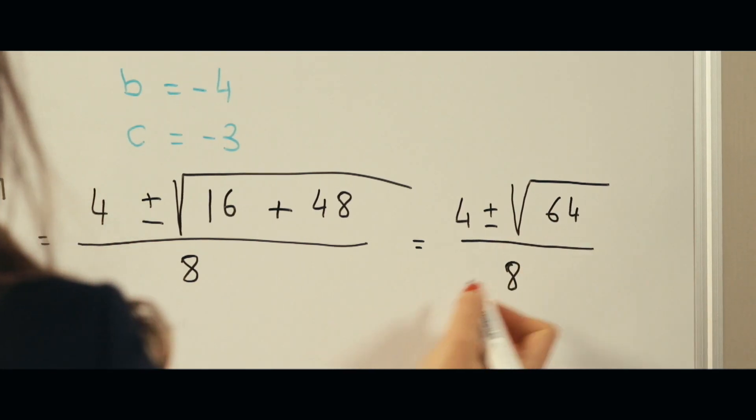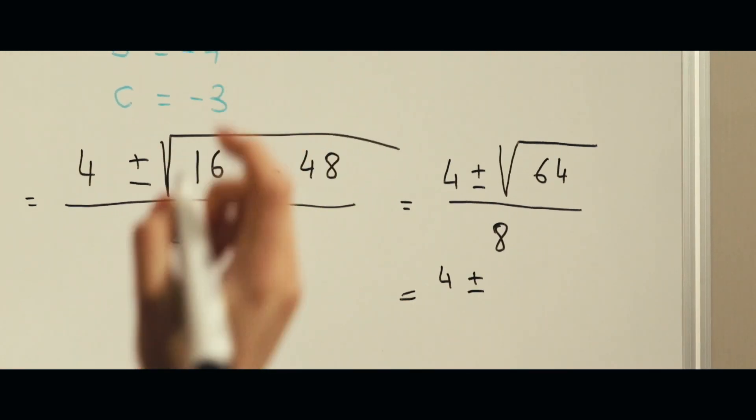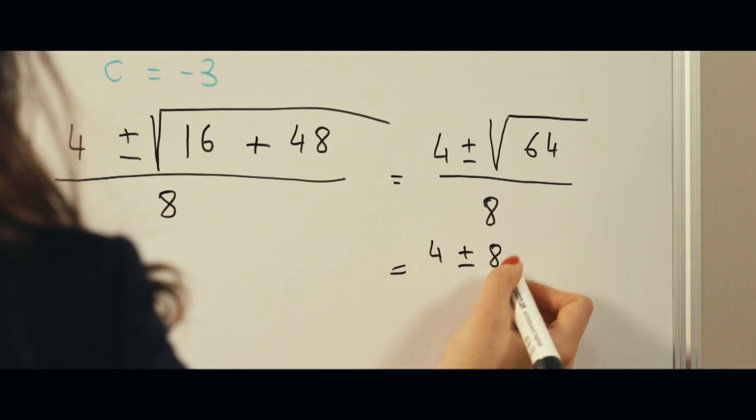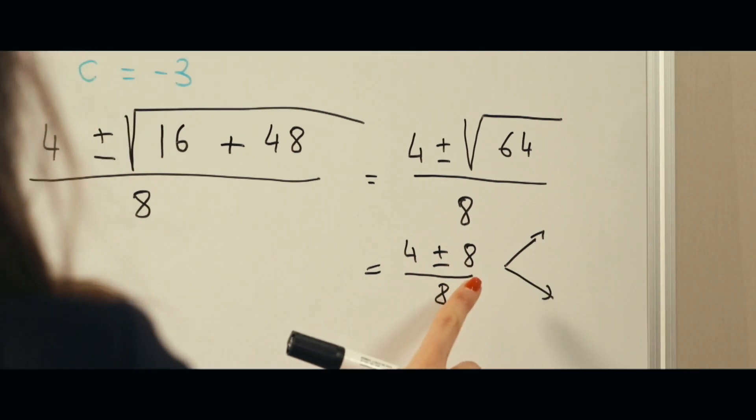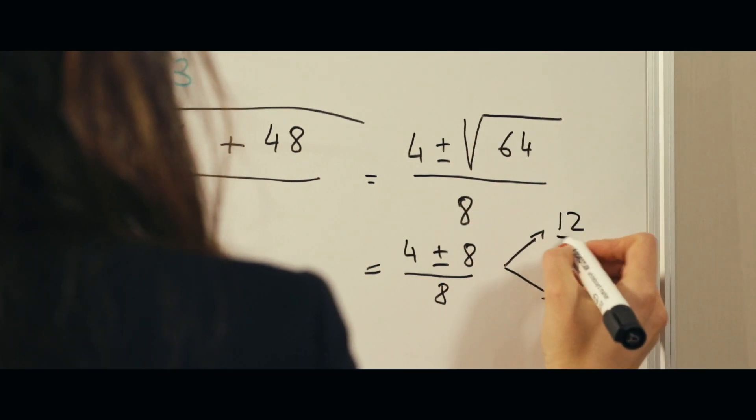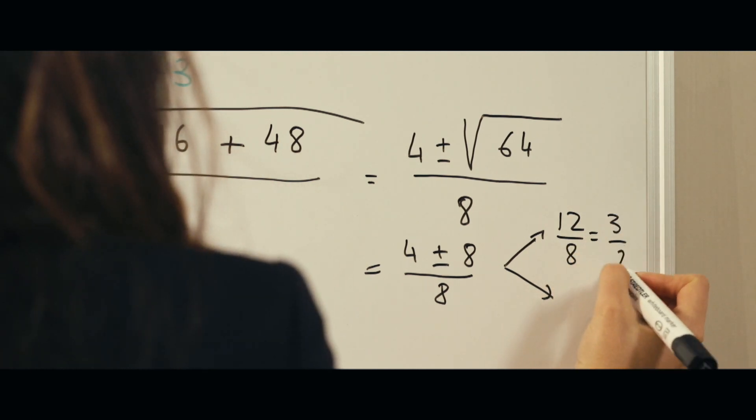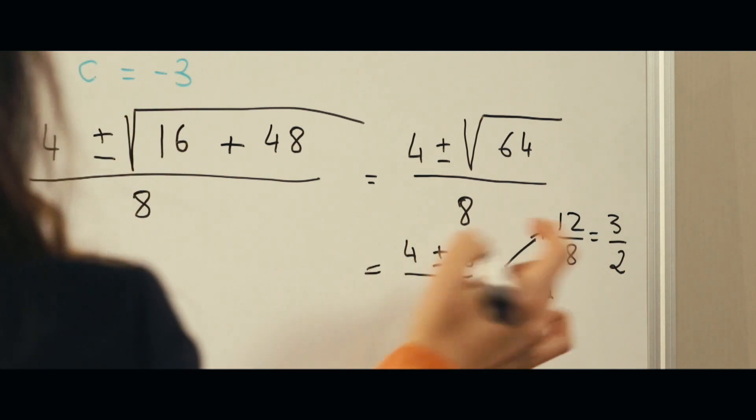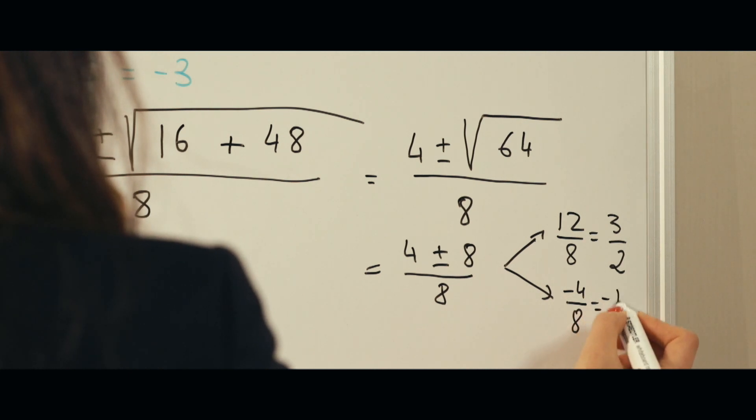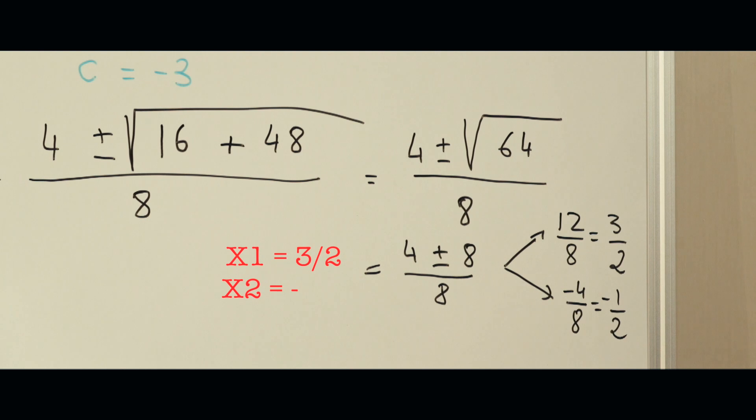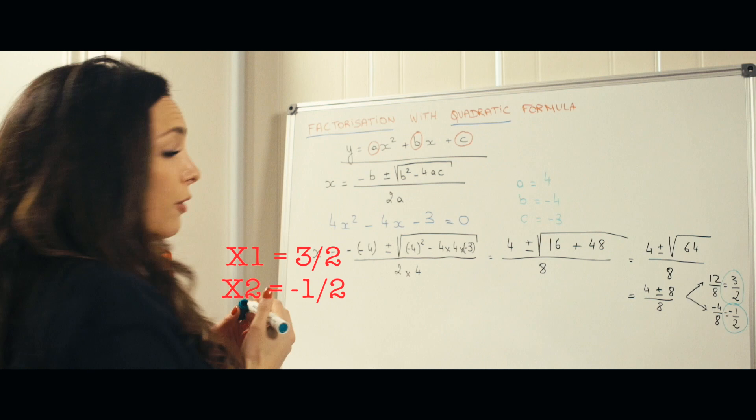This means two solutions here: 4 plus 8 divided by 8, that's 12 divided by 8, which equals 3 over 2. And then we have 4 minus 8 divided by 8, so that means minus 4 divided by 8, which is minus 1 half. So these are the two solutions for x.